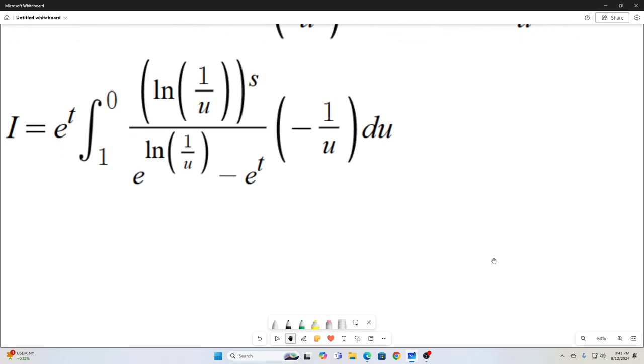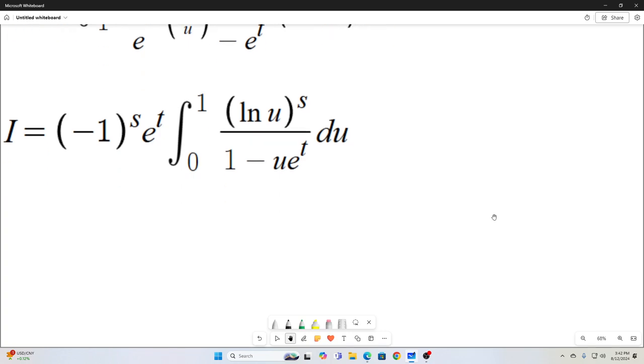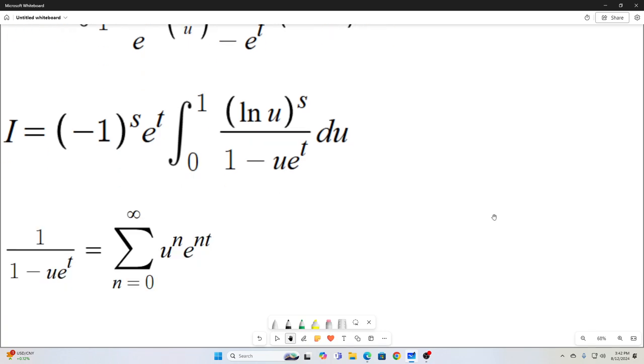All right, and then the next step, just simplify that a little bit. This negative one to the s right here, that comes from the properties of logarithms. When you use the properties of logarithms on this, you get negative natural log u, and then that's all raised to the s. So you can bring that negative one to the s out. So that's where that comes from. And then the rest is just simplification. I'm sure none of you would have any problem with that at all.